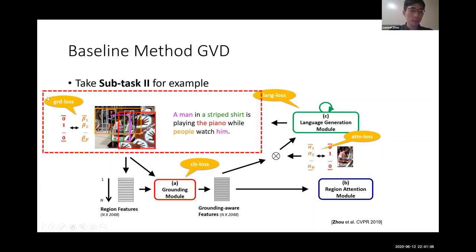The last one is a classification loss on the regions. This part is the essential module for our subtask 2. Here we got the caption, the description of the video, and at the same time, the grounded regions in the video.